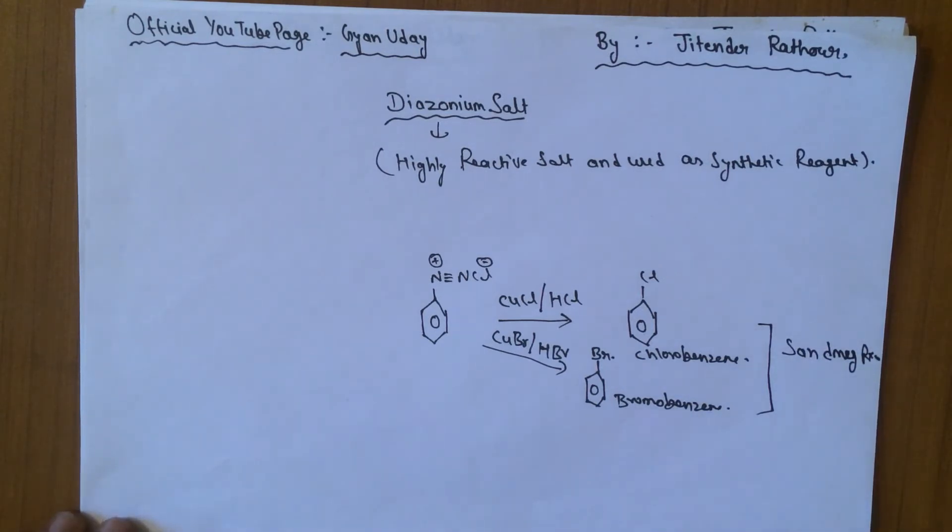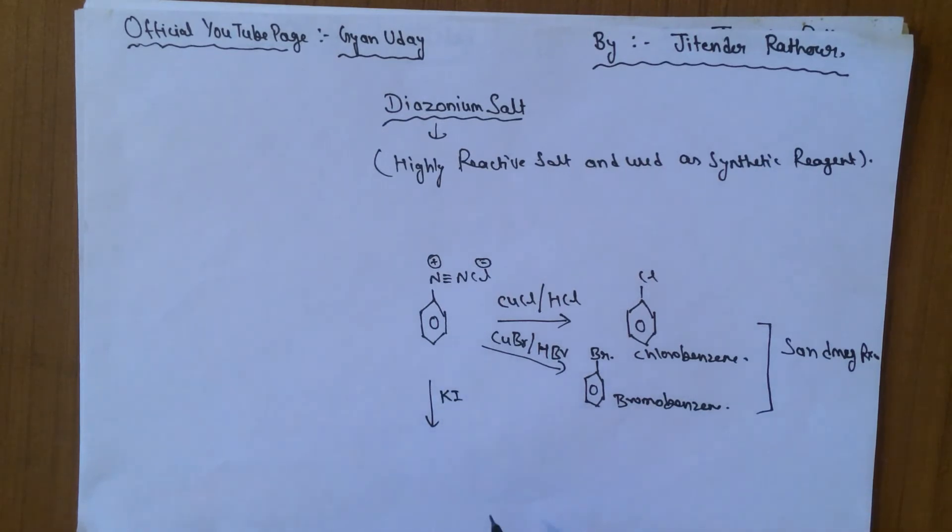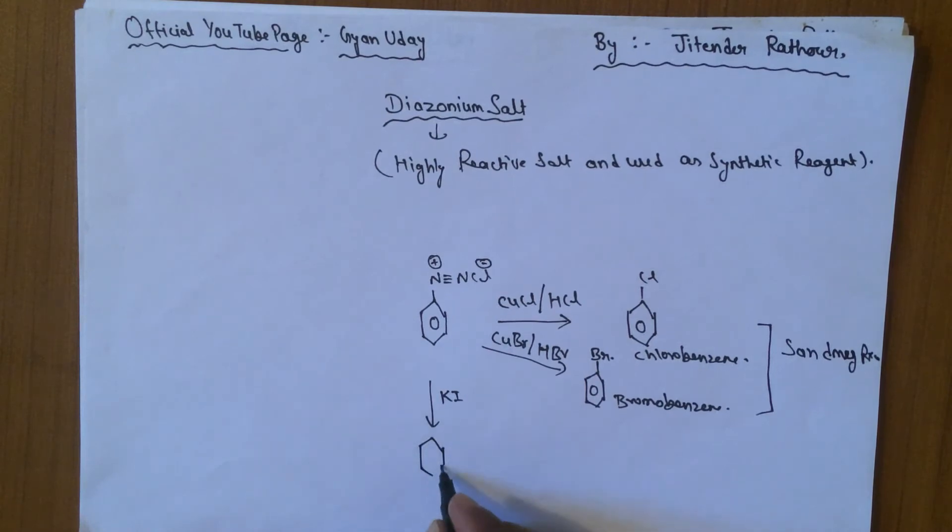And another reaction of diazonium salt is reaction with KI, which is known as potassium iodide, and the product is iodobenzene.